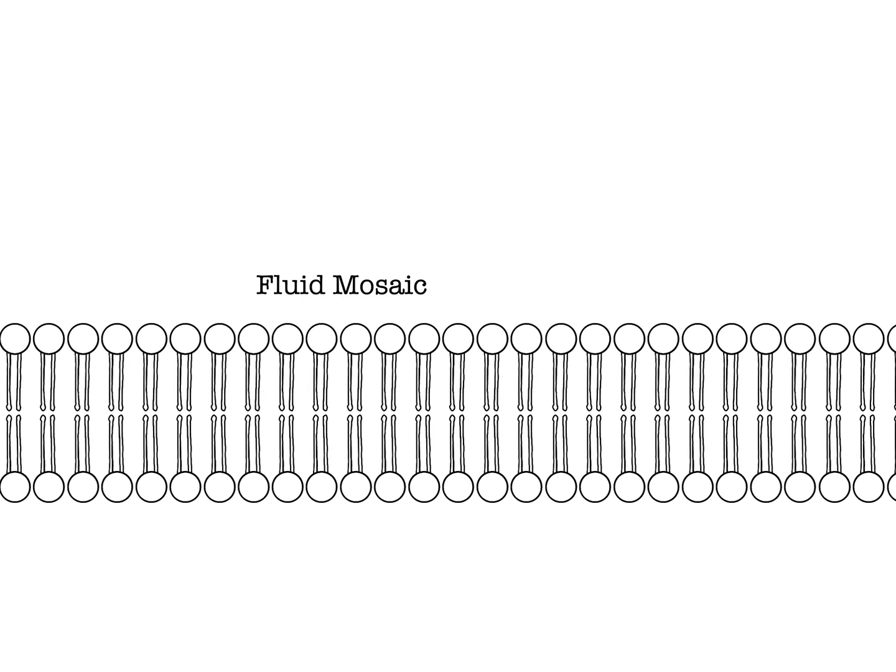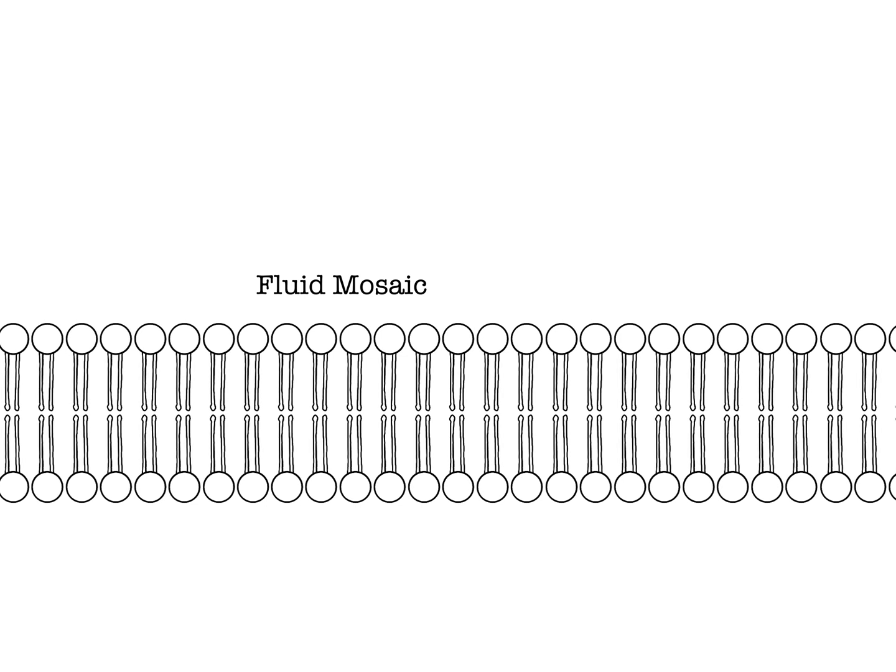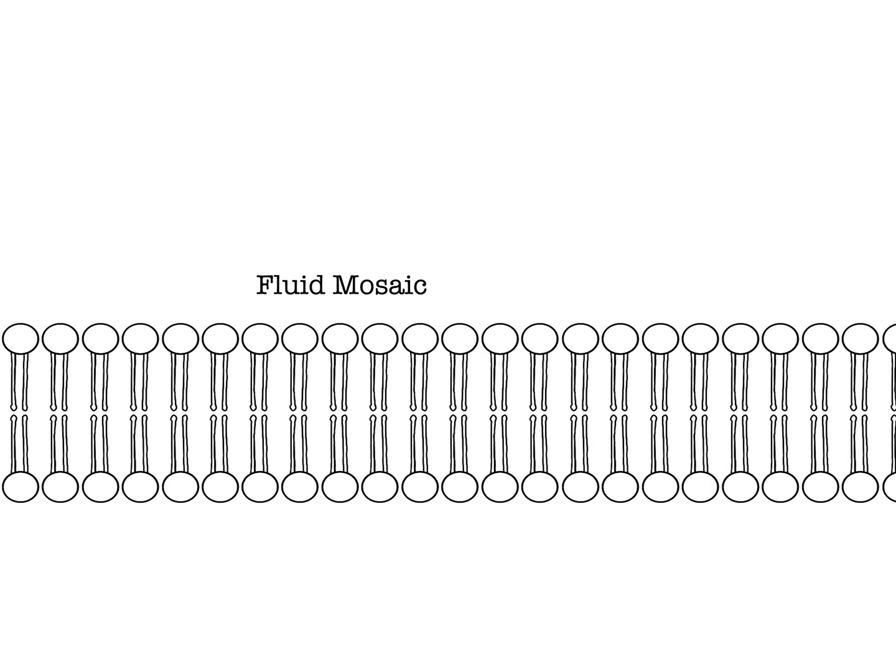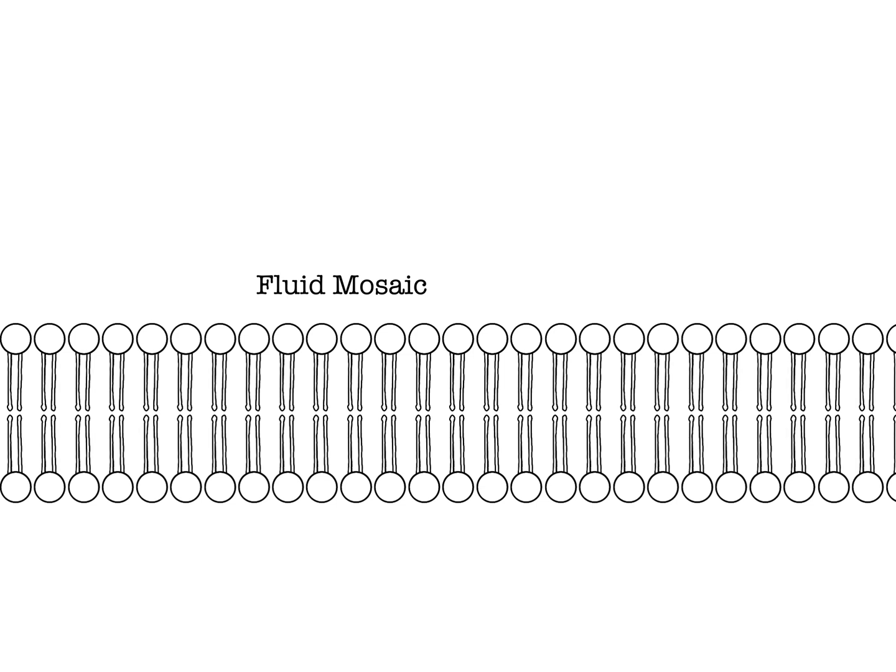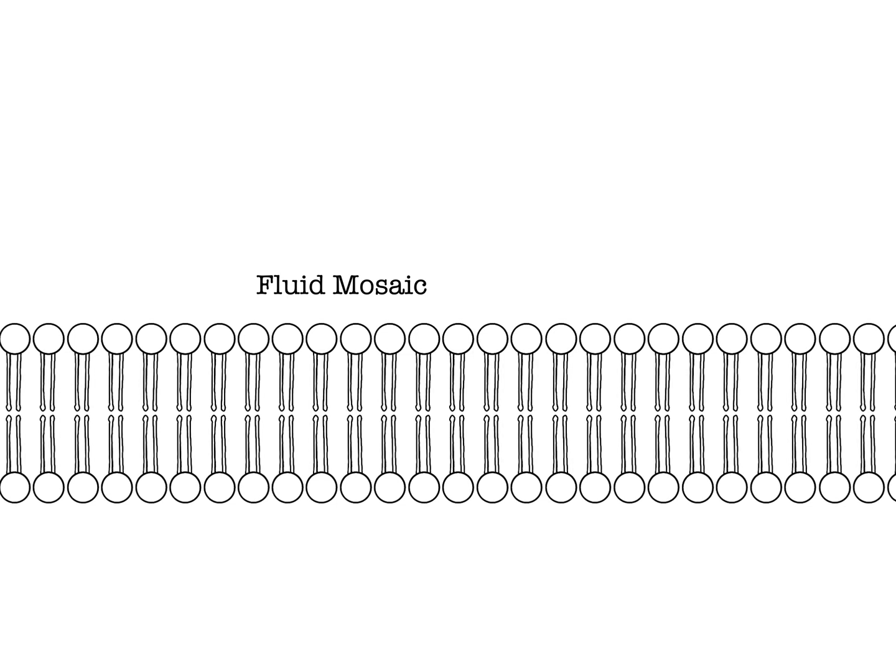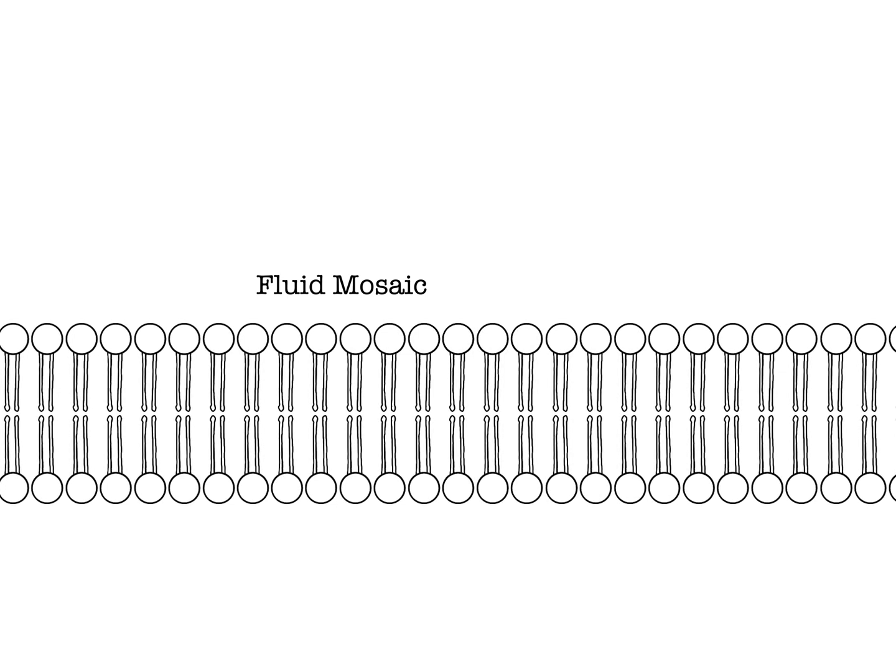This structure is called fluid mosaic, meaning that the phospholipids are free to move around but they stay together as a surface. Things can pass through the bilayer easily if they are soluble in lipids.